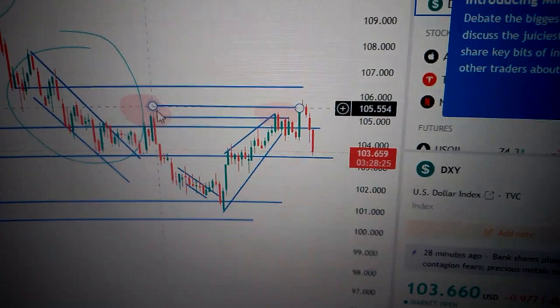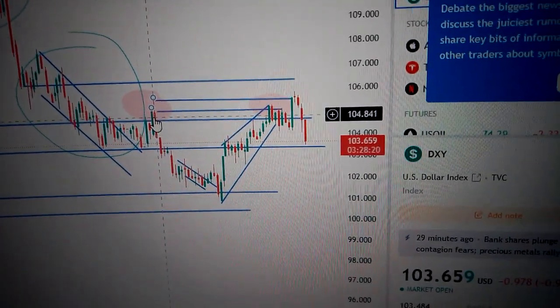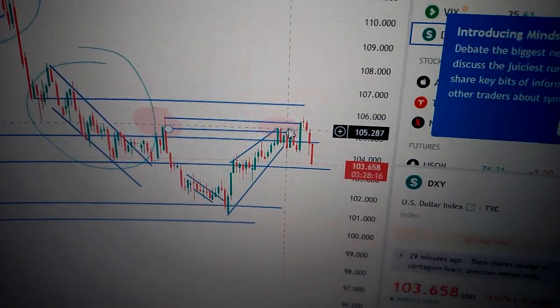This pink area is actually the former high it made on the 6th of January. So if we can break out from the pink area, then it will be a higher high.